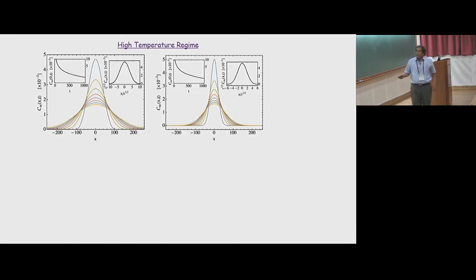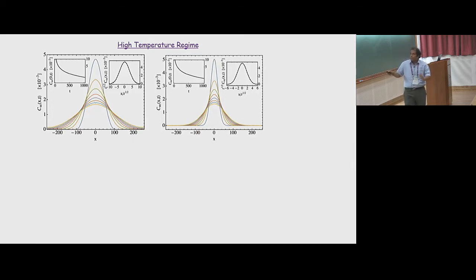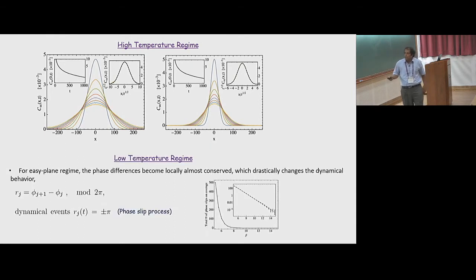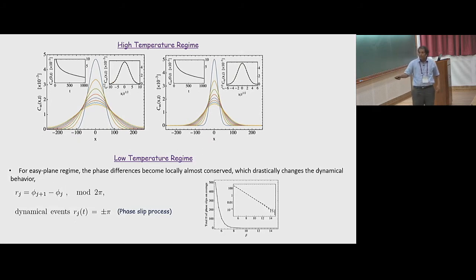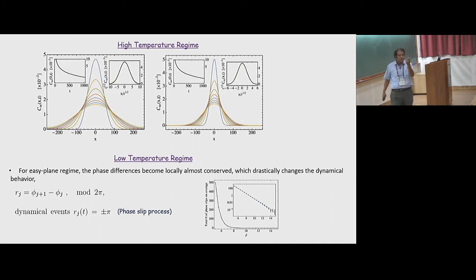At high temperature for the XXZ spin chain — which is non-integrable — you get diffusive behavior: the Sz-Sz correlator and the energy-energy correlator are both diffusive. The number of phase slips grows exponentially with temperature at low temperatures, which is why it is very difficult to see the crossover — a small change in temperature switches the behavior. But the exponential behavior is very cleanly seen.